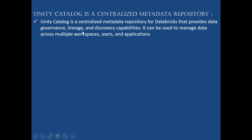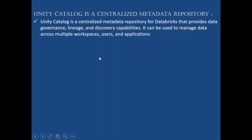Unity Catalog provides data governance, lineage, and discovery capabilities. Data governance means the rules we are following. Lineage means dependency — what is the dependency between tables. Discovery capabilities means finding new patterns within the data. All these things we can get with the help of Unity Catalog.